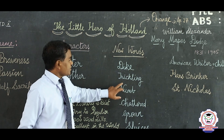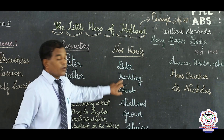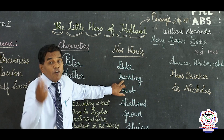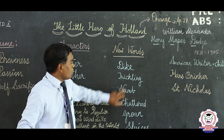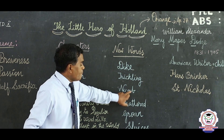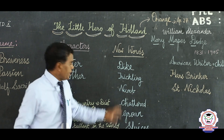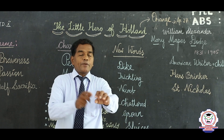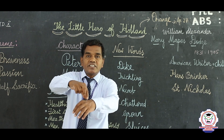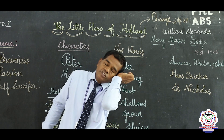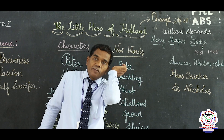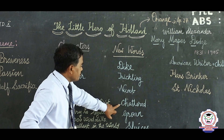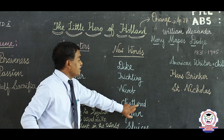'Trickling' — flowing in a small stream, like water dropping slowly one by one. 'Numb' — N-U-M-B — deprived of the power of sensation. For example, when you sleep for hours with your hand in one position, the hand becomes numb — no sensation.